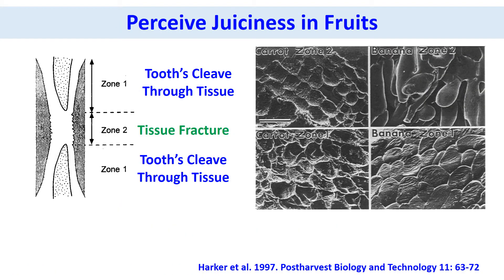I would like to include a few examples to show the complexity of sensory properties. I am going to explain how we perceive juiciness. In the case of fruits and vegetables, we perceive apples or carrots as more juicy than bananas, although all are nearly at the same moisture content. Why? Cell-to-cell adhesion in apples or carrots is high, therefore cells collapse during biting and release juice, and we feel juicy. However, in bananas, cell-to-cell adhesion is low, so cells separate during biting and no juice is released, and we don't feel juicy.